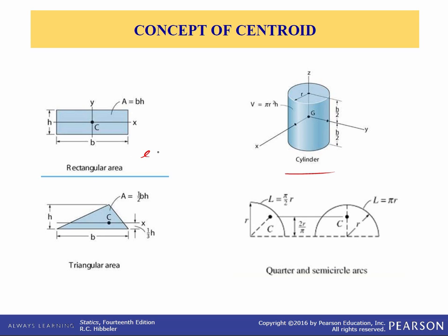For a rectangular area, the centroid is located at the center of the rectangle, so it's b over 2 and h over 2. For a cylinder, the z-axis passes through the center of gravity since it's symmetric about that axis, and it's located at half of the height of the cylinder. For a triangle, the centroid is located one-third away from the longer side. You can see likewise for quarter and semicircular arcs where the centroid is located. Look on the inside cover of the book and you'll find equations for a number of simple shapes.